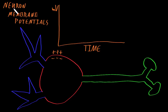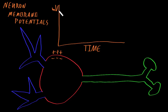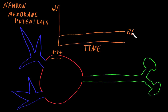These membrane potentials are how neurons perform their function, which is to process and transmit information. Without input, most neurons have a stable separation of charges across their membrane — a membrane potential — so that if we looked anywhere along the cell membrane and graphed it, with time on the x-axis and the strength of the charge separation in millivolts on the y-axis, the membrane potential would be stable over time. That stable membrane potential in the absence of input is called the resting potential.